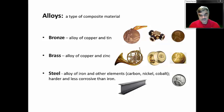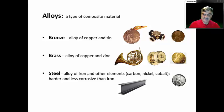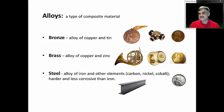Brass also has good acoustical properties, so we use it in making horns — you've heard of a brass quintet. You may also know that coins, including pennies, are made out of bronze, copper, or brass. Pennies have been made from different materials over the years — at one period they were made out of bronze, then brass. Currently, pennies are made primarily out of zinc with a thin copper outer coating.